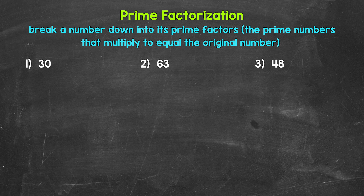When it comes to the prime factorization of a number, we break the number down into its prime factors. These are the prime numbers that multiply to equal the original number. So we are decomposing a number, breaking a number down to only prime numbers. And remember, prime numbers only have two factors: one and the number itself.